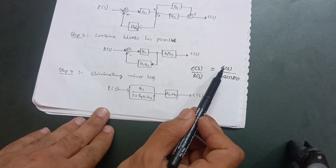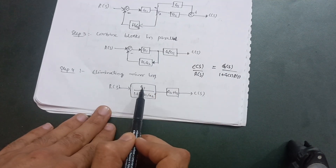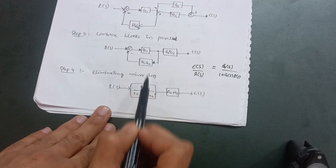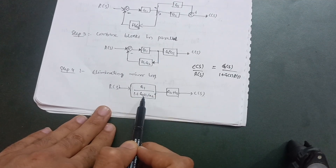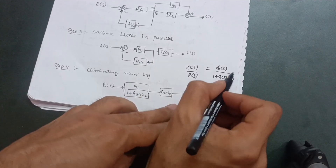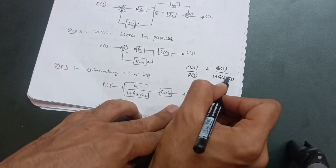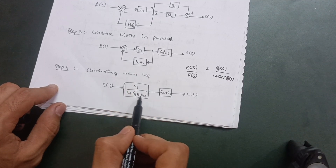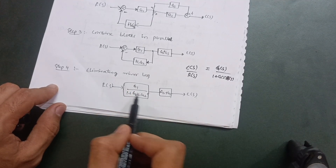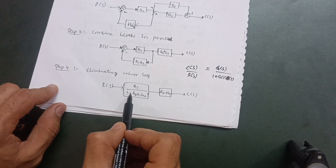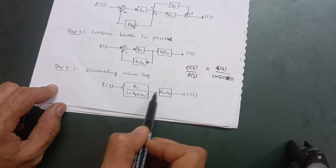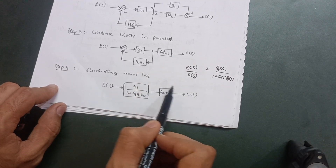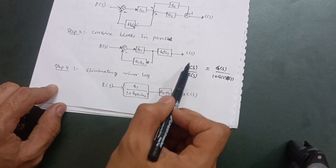Introducing this formula here: G(s) is G1, so I write G1 upon 1 plus G1 — then H(s) is the feedback path H1·G2, so I write H1·G2 here. This gives G1 / (1 + G1·H1·G2) as the reduced minor loop block. The rest remains the same: G2 plus G3, and the output C(s).